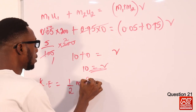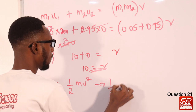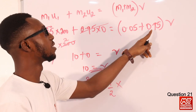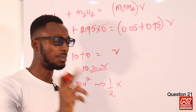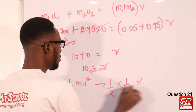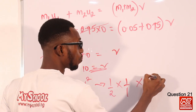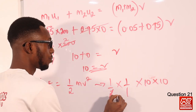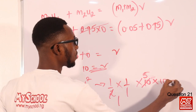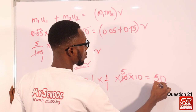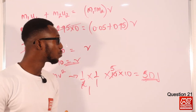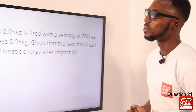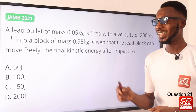KE = half times the combined mass (0.05 + 0.95 = 1 kg) times v squared (10² = 100). That gives half times 1 times 100 = 50 joules. So the kinetic energy after impact is 50 joules. Going back to the screen, option A is the right option.